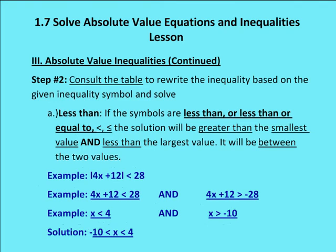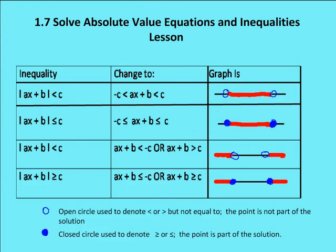The first thing you want to do is consult the inequality table to rewrite the inequality based on the given symbol and solve. If the absolute value is less than some value — or less than or equal to — then the solution will be between two points, and you'll use 'and.' If it's greater than — or greater than or equal to — then the solution will be outside of the two points, and you'll have Ax plus B less than negative C, or Ax plus B greater than C, and you'll use 'or.'